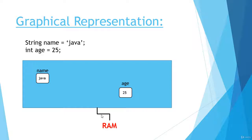String is the data type of the variable — that is, which type of data we are going to store. Then I have typed 'name', which is the name of the variable. You can type anything here, and 'java' is the value that is going to be stored in the name variable. You can see in the RAM a white box — that white box is the memory location in which 'java' is stored. The name of this memory location is 'name', and this is what we call our variable.